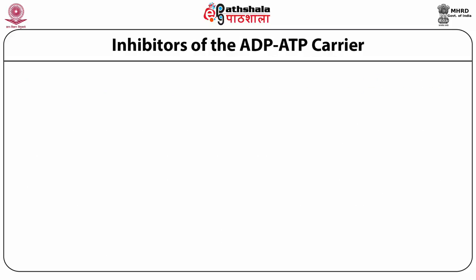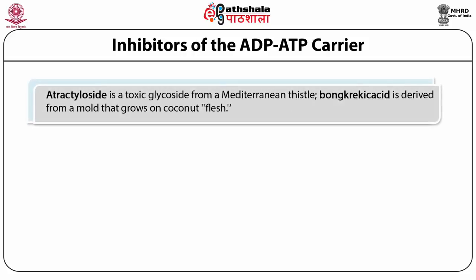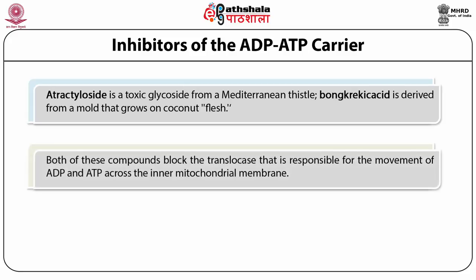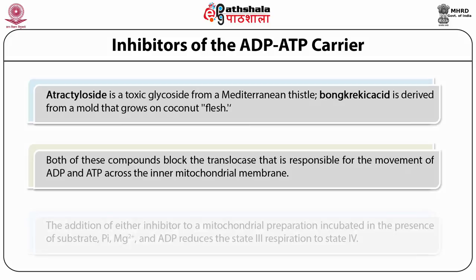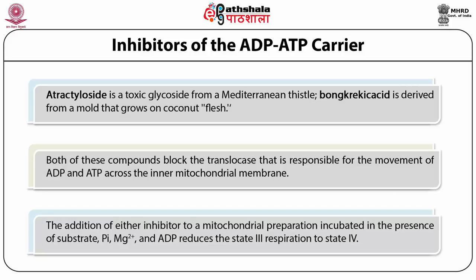Inhibitors of the ADP-ATP carrier: Atractyloside is a toxic glycoside from a Mediterranean plant. Bongkrekic acid is derived from a mold that grows on coconut flesh. Both compounds block the translocase responsible for the movement of ADP to ATP across the inner mitochondrial membrane. The addition of either inhibitor to a mitochondrial preparation incubated in the presence of substrate, inorganic phosphate, magnesium, and ADP reduces the state 3 respiration to state 4.